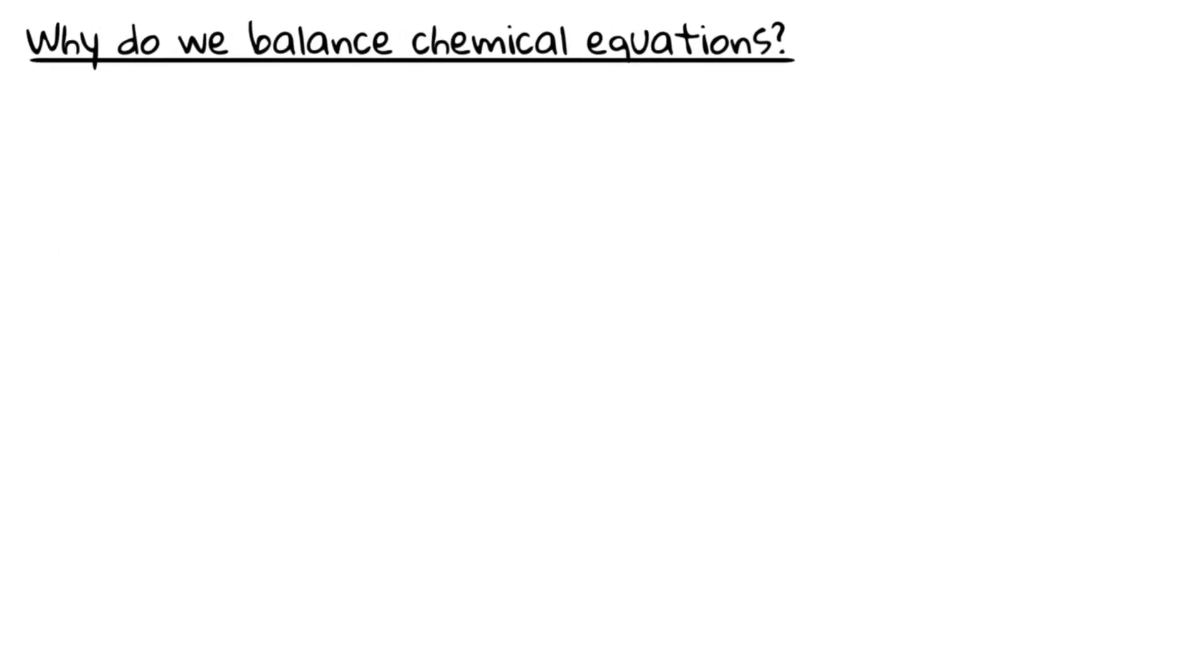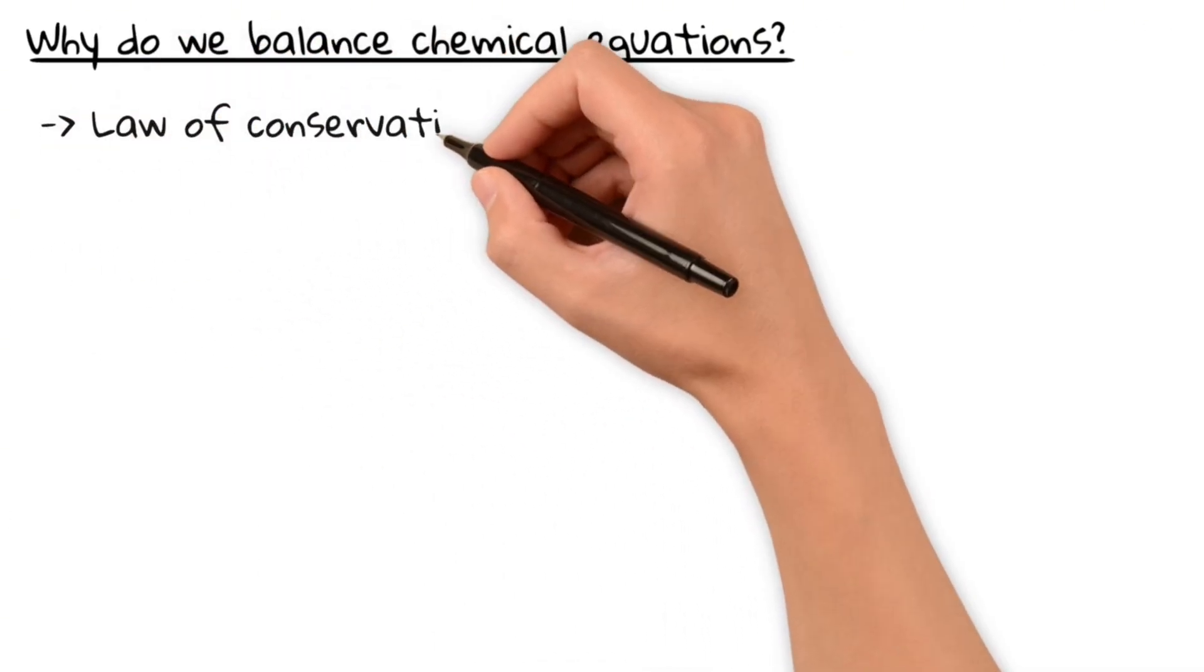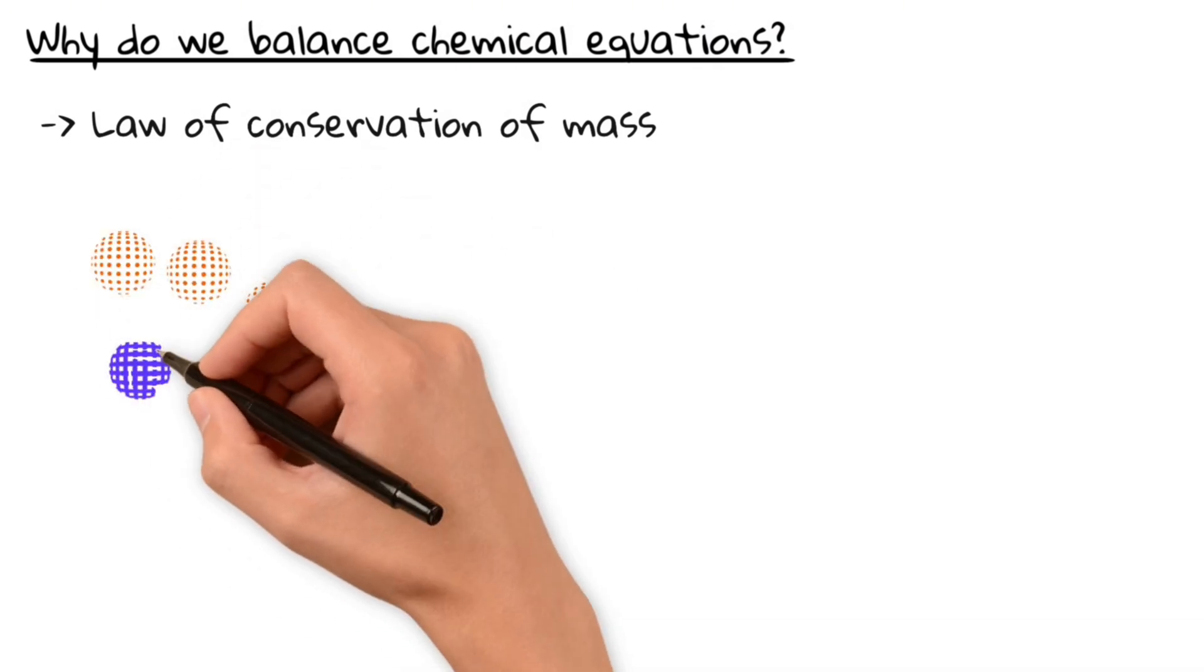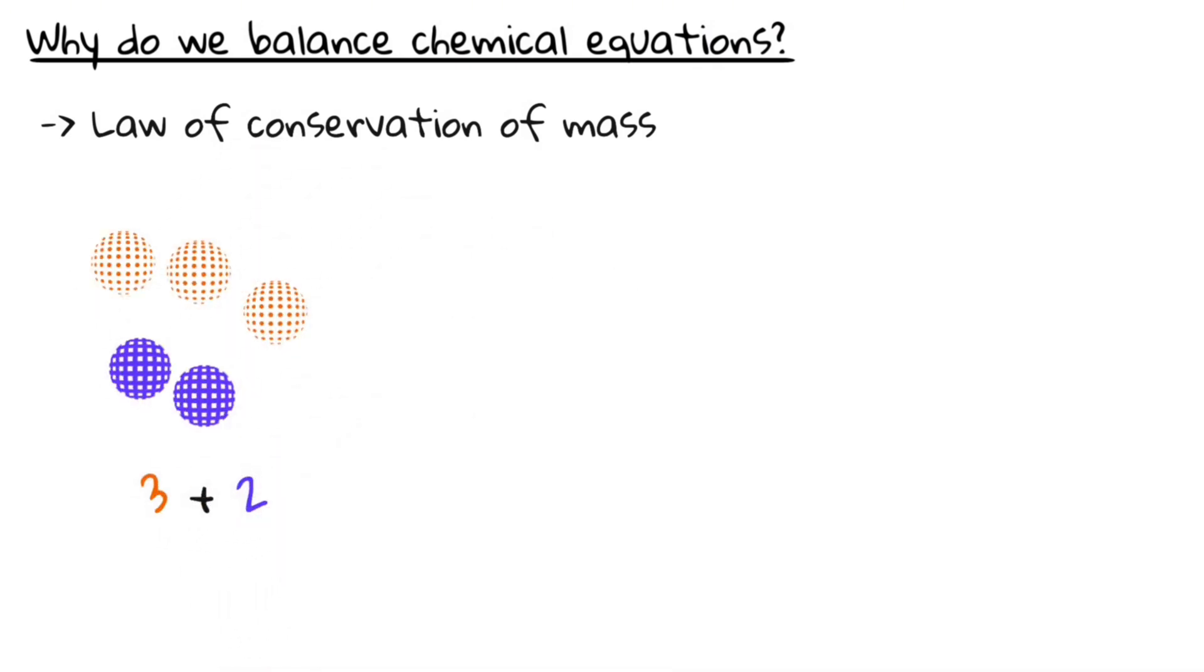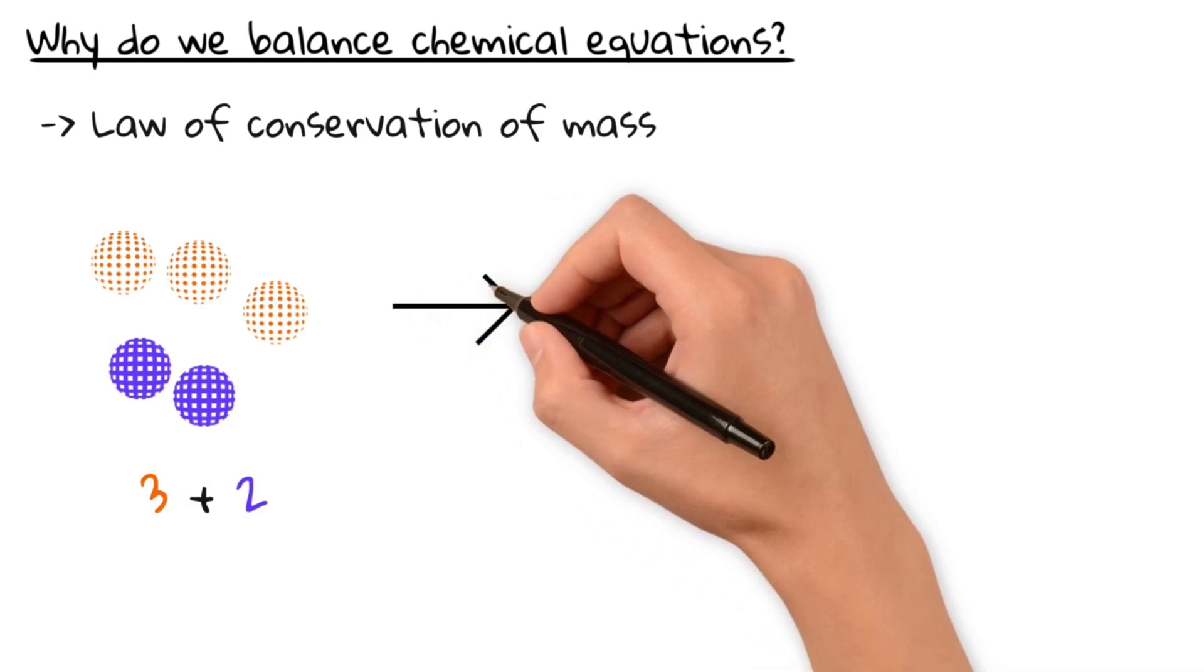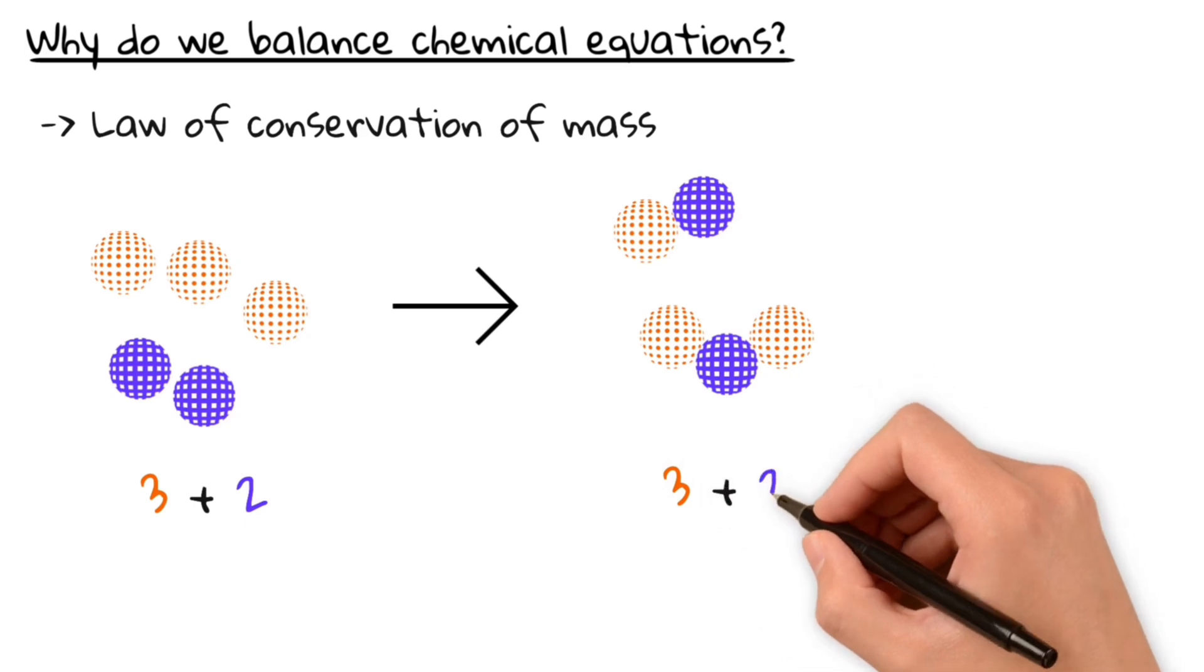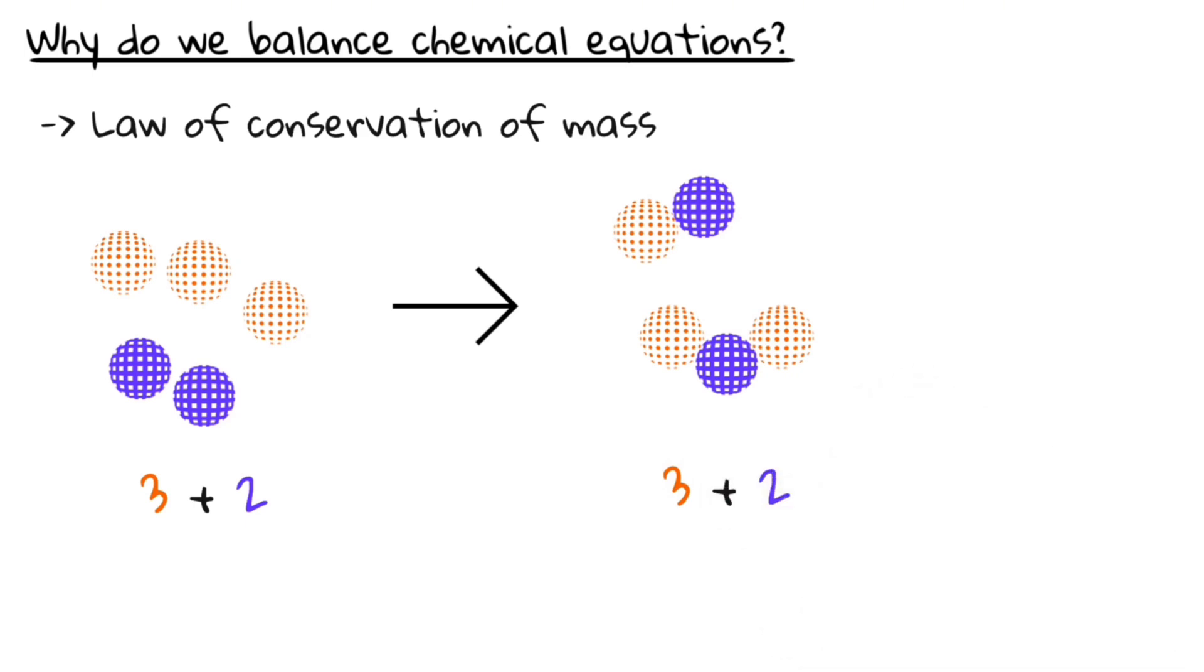Let's start with why equations must be balanced. In any chemical reaction, mass is conserved. This means that the number of atoms for each element must be the same before and after the reaction. Atoms don't just disappear and they don't appear out of nowhere, they just rearrange.